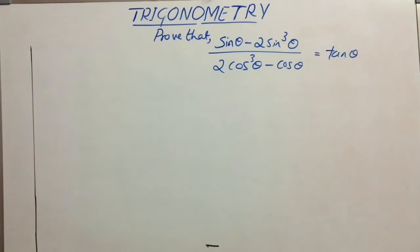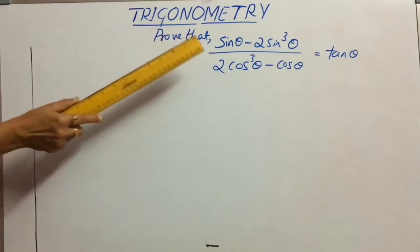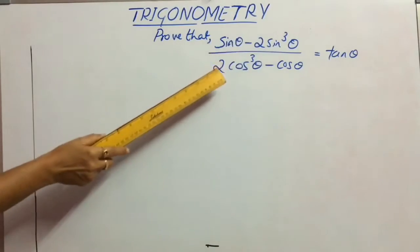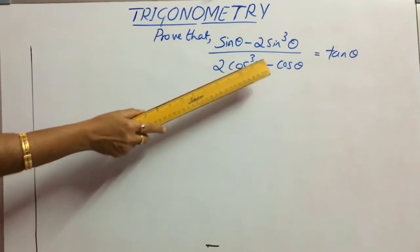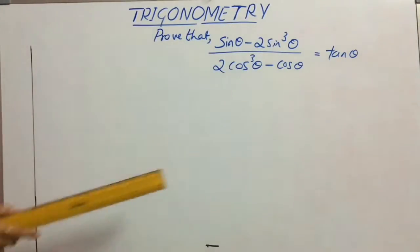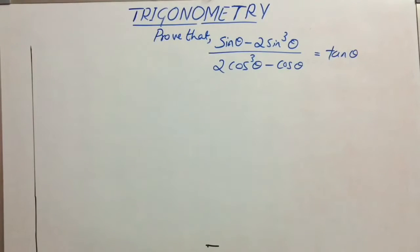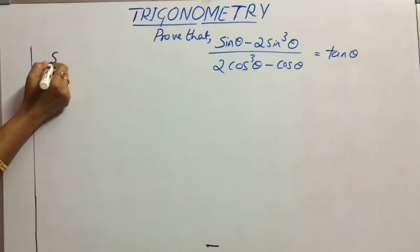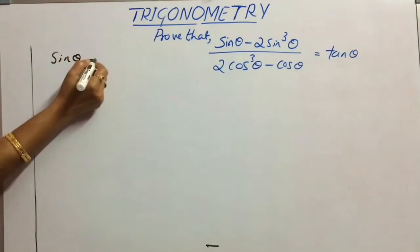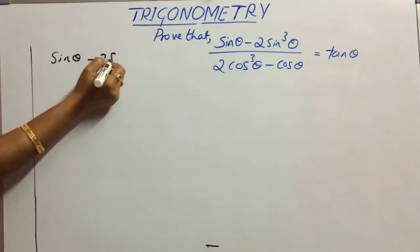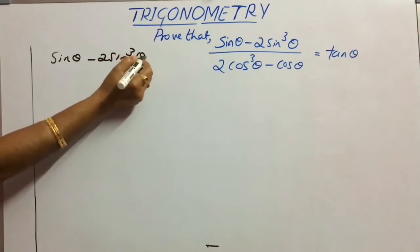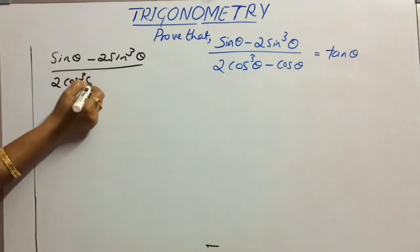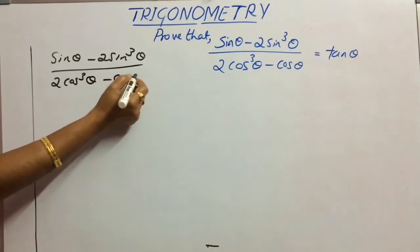Consider the first question: prove that (sin θ - 2sin³θ) divided by (2cos³θ - cos θ) is equal to tan θ. Consider the LHS part: sin θ - 2sin³θ divided by 2cos³θ - cos θ.